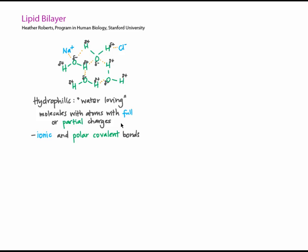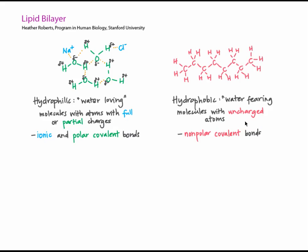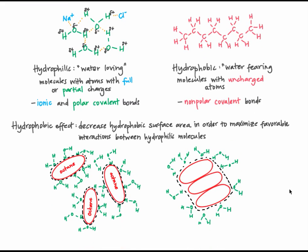In the tutorial on hemoglobin, we explored hydrophilicity and hydrophobicity. We saw that molecules made primarily of atoms with full or partial charges can typically interact favorably with water, because the atoms of water are partially charged. These molecules are called hydrophilic or polar molecules, and they contain ionic and/or polar covalent bonds, which create those charges or partial charges. Molecules made primarily of uncharged atoms typically cannot interact favorably with water, and these molecules are called hydrophobic or nonpolar molecules. They contain mainly nonpolar covalent bonds. Any hydrophilic molecules that neighbor hydrophobic molecules must forgo favorable interactions with other hydrophilic molecules. This is what causes the hydrophobic effect.